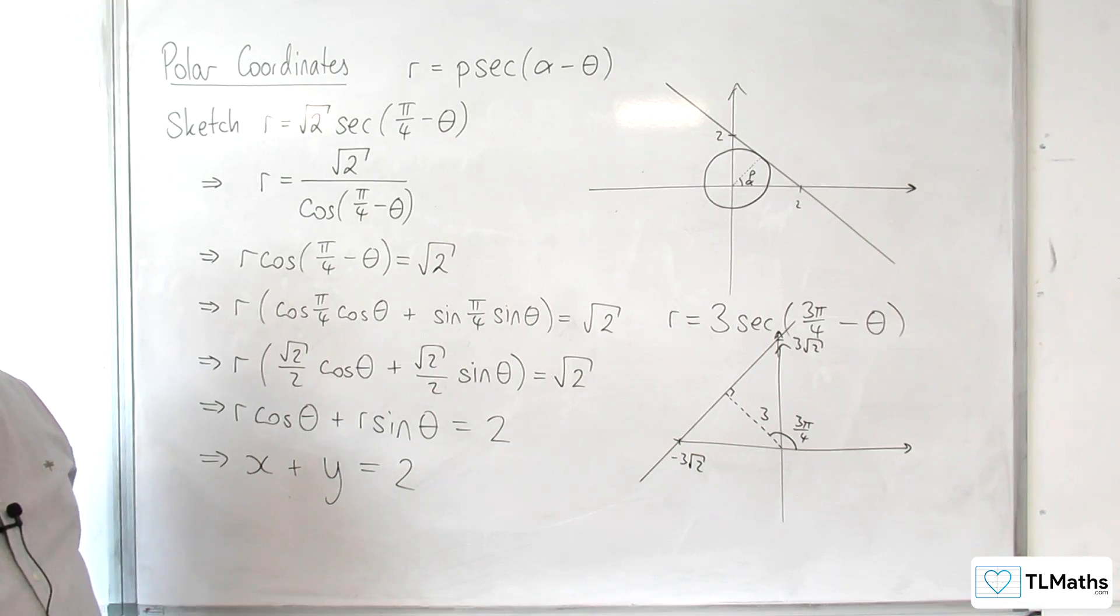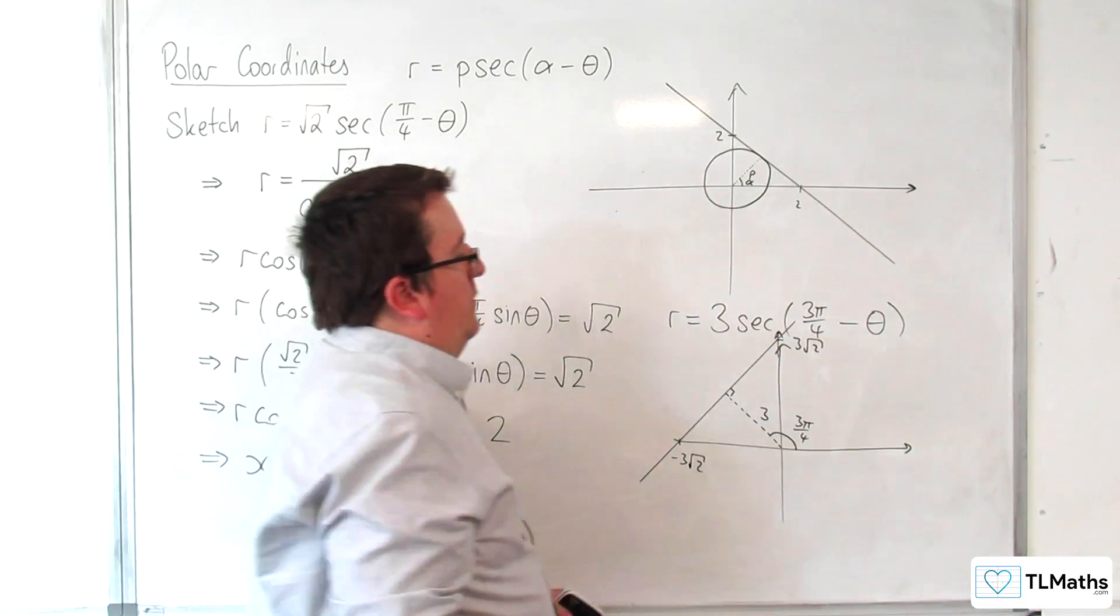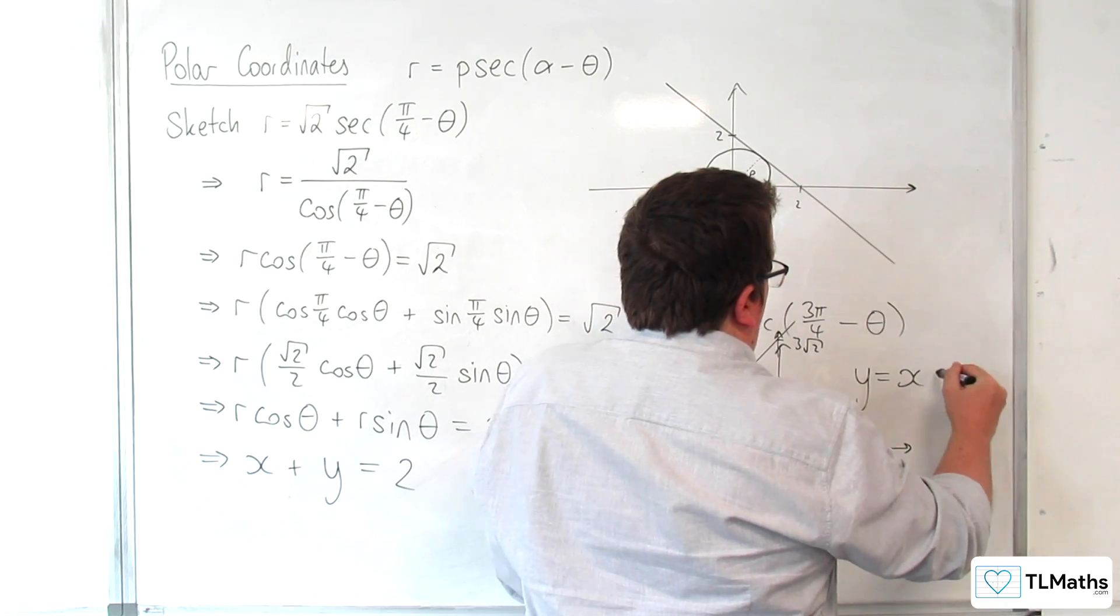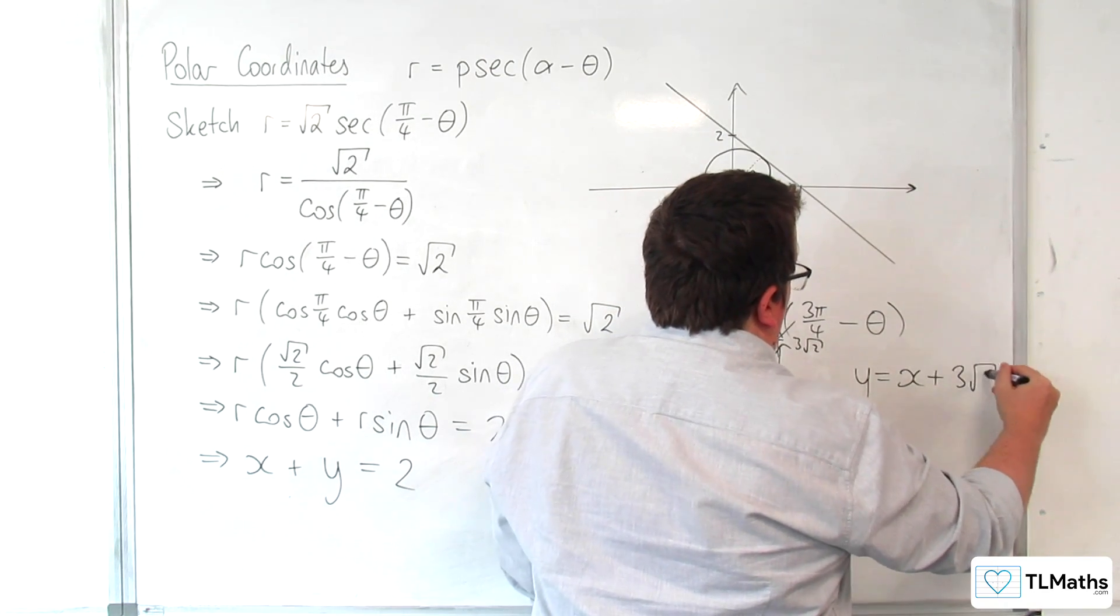So if you wanted the Cartesian form, then that would be y equals x plus 3 root 2.